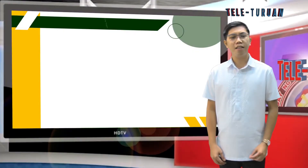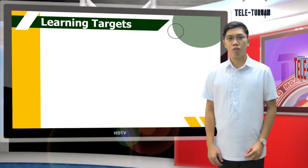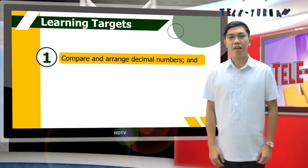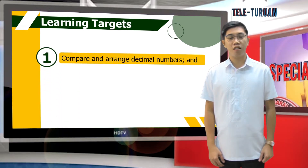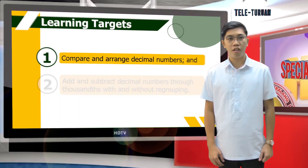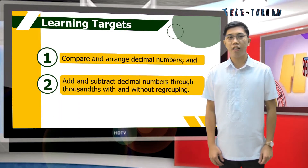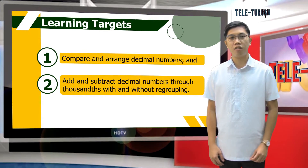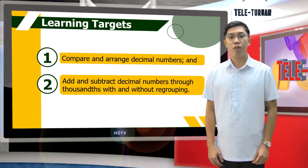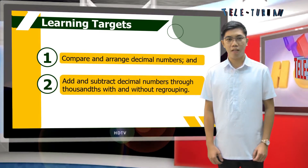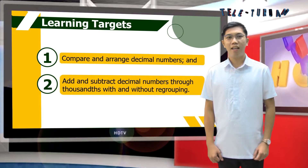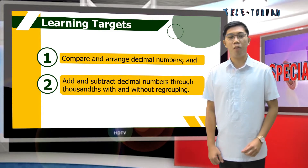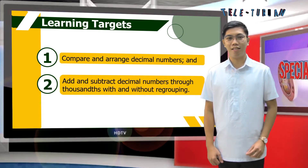At the end of this episode, you are expected to compare and arrange decimal numbers, and add and subtract decimal numbers through thousandths with and without regrouping. Let's begin this episode with a short review of our past lesson.